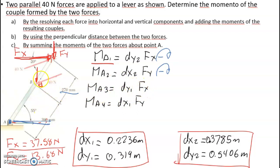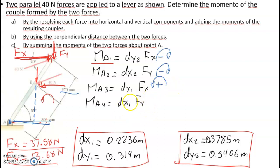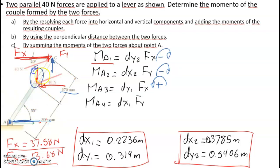For Moment A3, Force X applied at B interacts with distance dy1 — this interaction creates a counterclockwise rotation, so it is positive. For the last term, Moment A4, Force Y is going down and the interacting distance is dx1. Even though there is a sign confusion at first, we resolve that Force Y going down with this distance creates a clockwise rotation — so that is negative. If we reverse the sense, it would be positive.